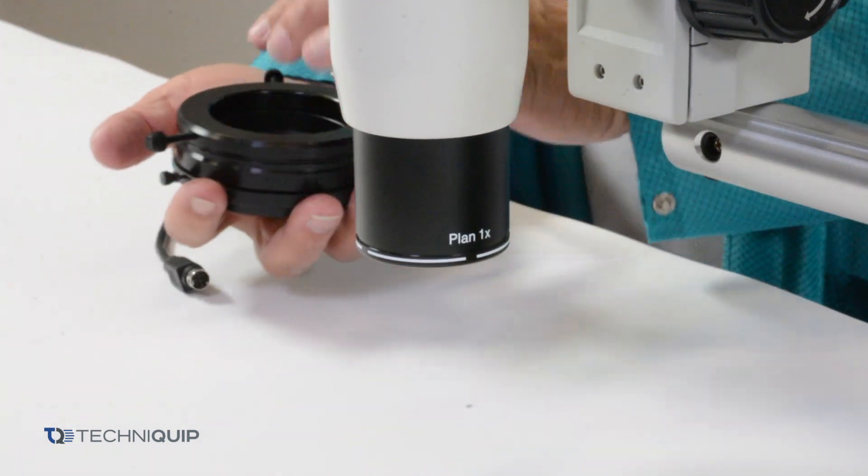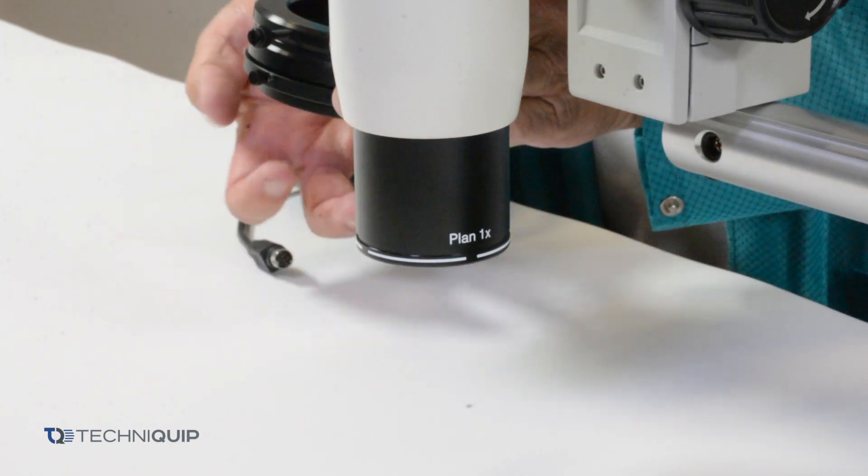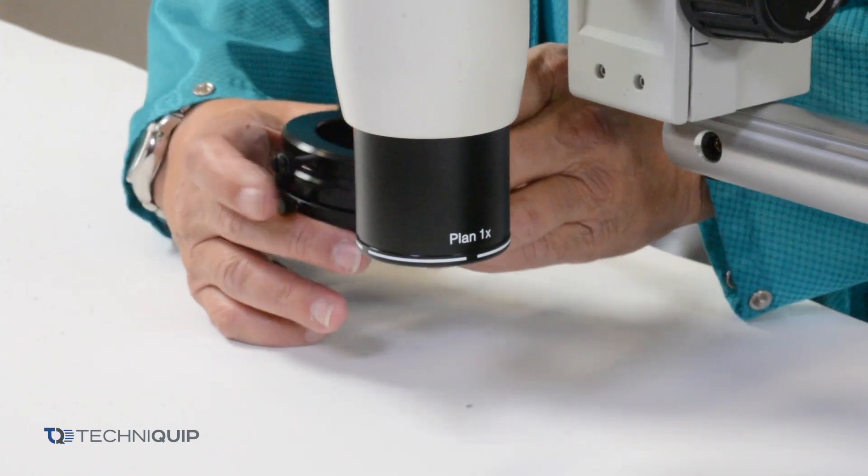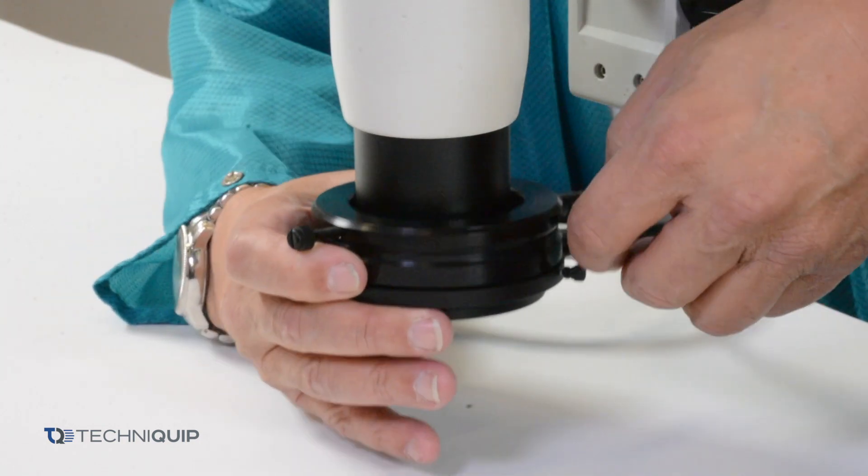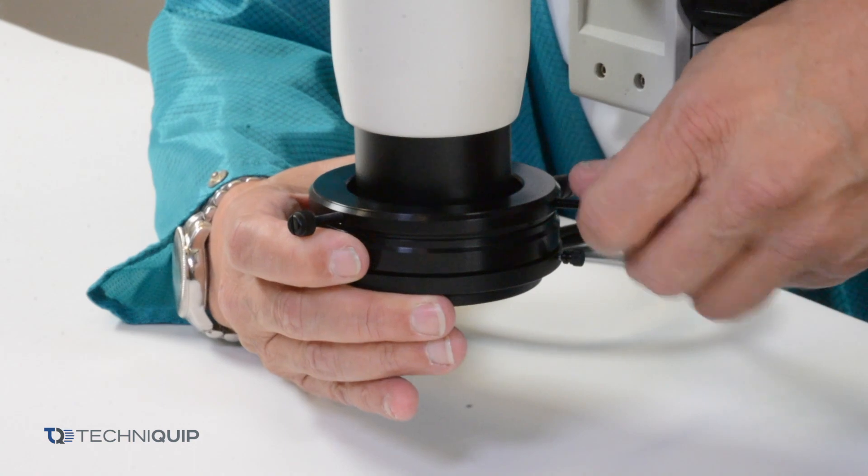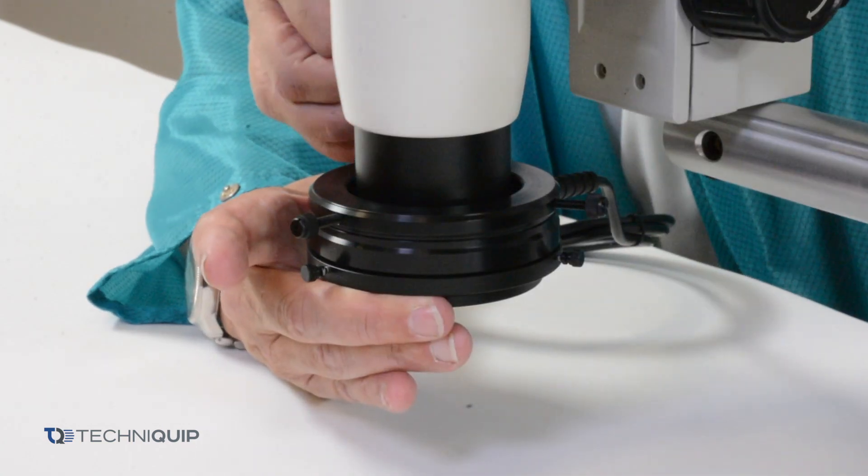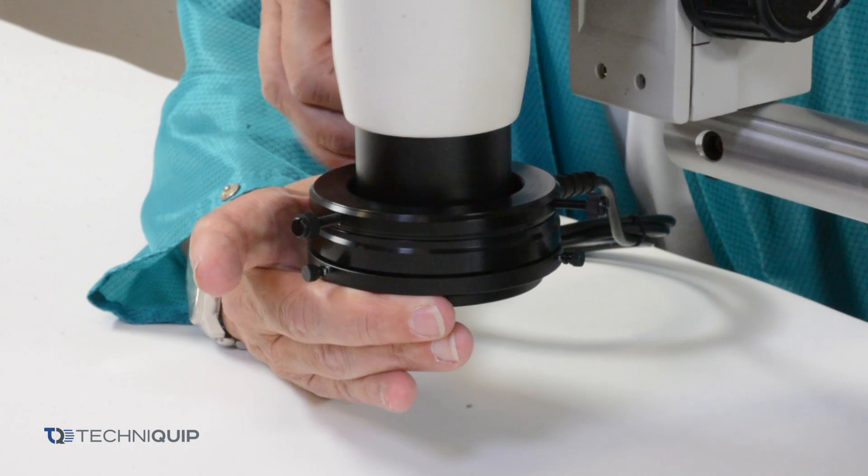What you're going to do is make sure you back out the thumb screws. Keep your fingers off of the filters. So grip it around the body, carefully install it over the lens, and then snug down a little at a time all three thumb screws.